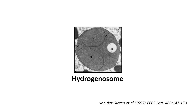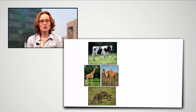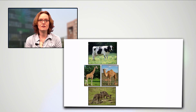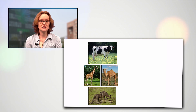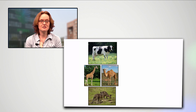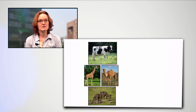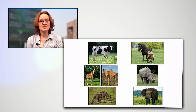Anaerobic fungi are commonly cultured from the digestive systems of large herbivorous mammals. Herbivores are either foregut fermenters with four-stomach fermentation of plant material, or hindgut fermenters.